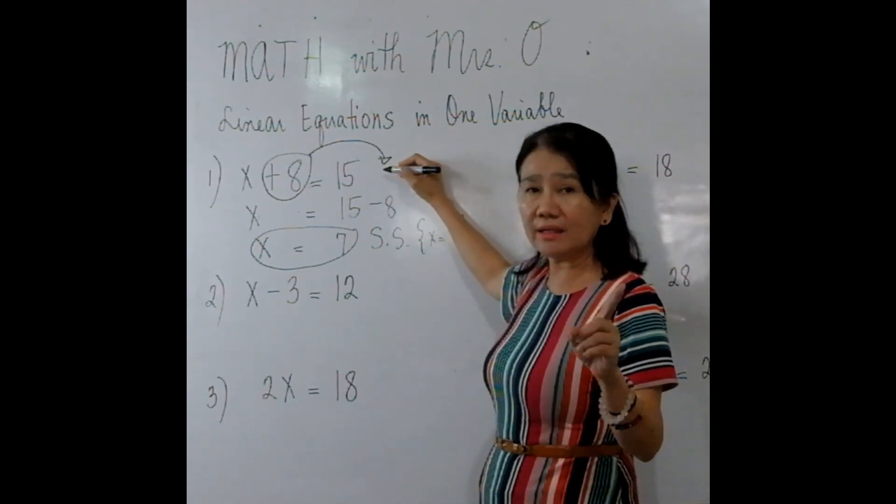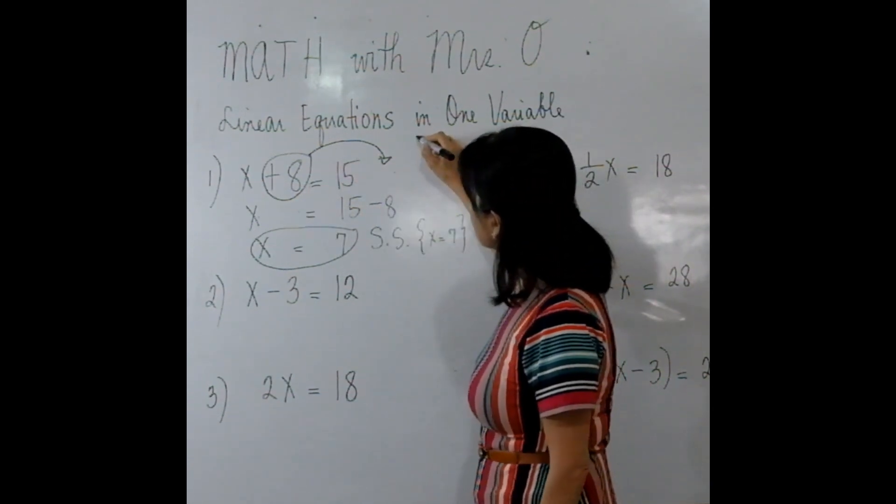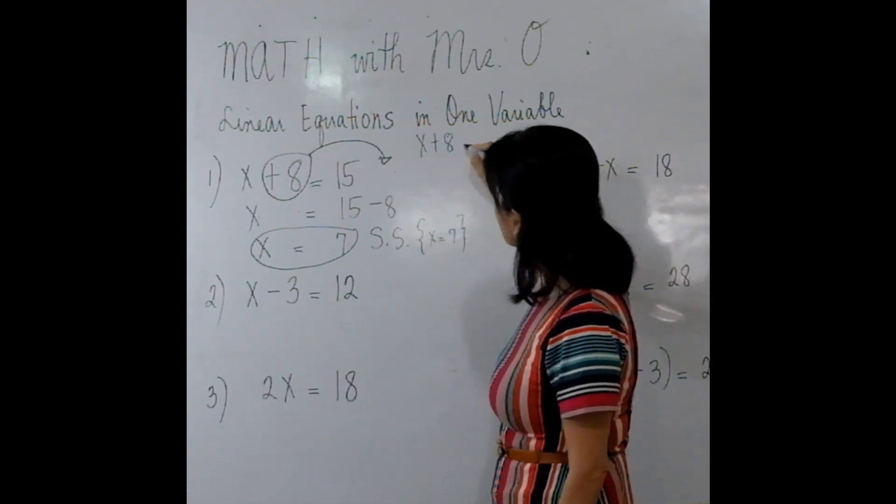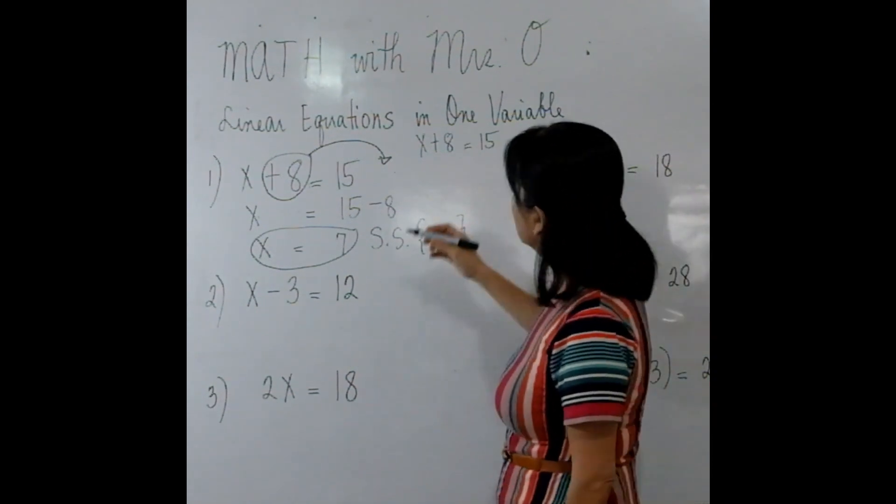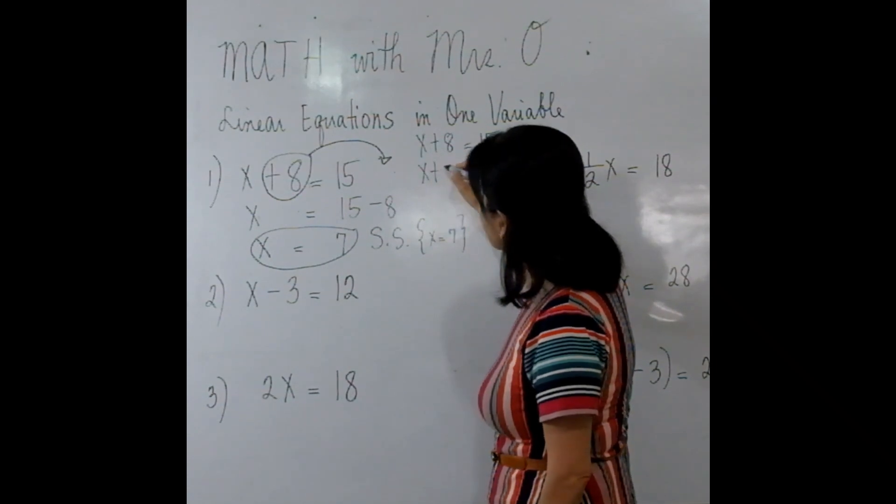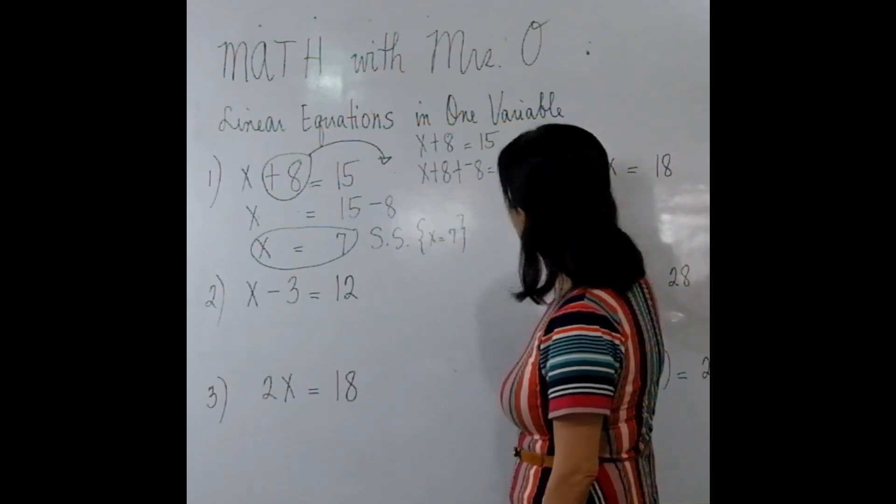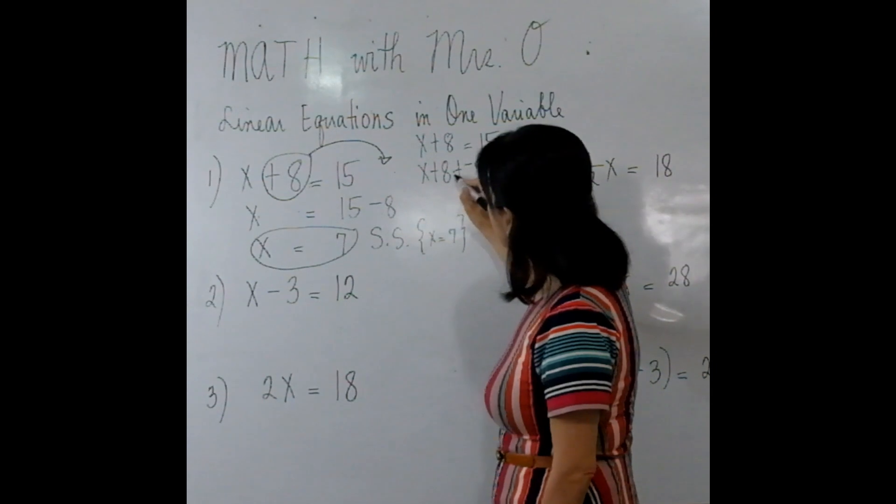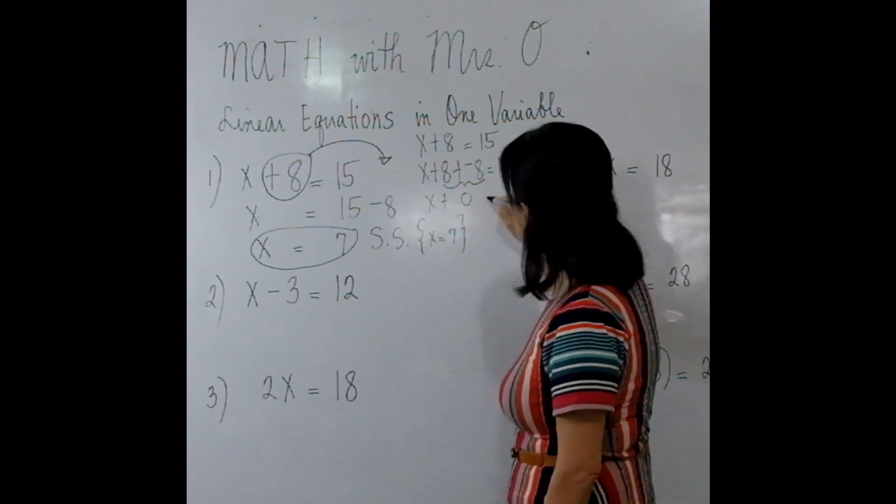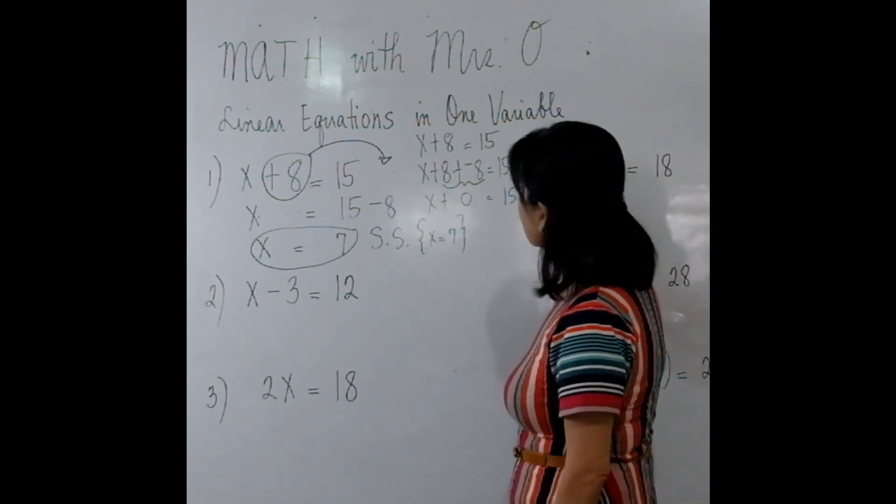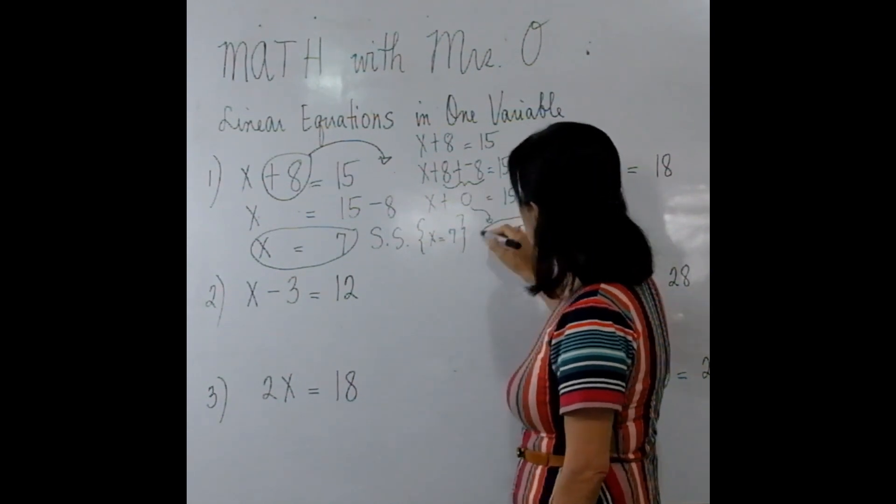Now let me explain to you why whenever you transpose to the other side, you change the sign. Because if you have X + 8 = 15, in the long way, using the addition property of equality, we should be adding negative 8. So X + 8 + (-8) = 15 + (-8). Now take note that this is also the same as X + 0 = 15 - 8.